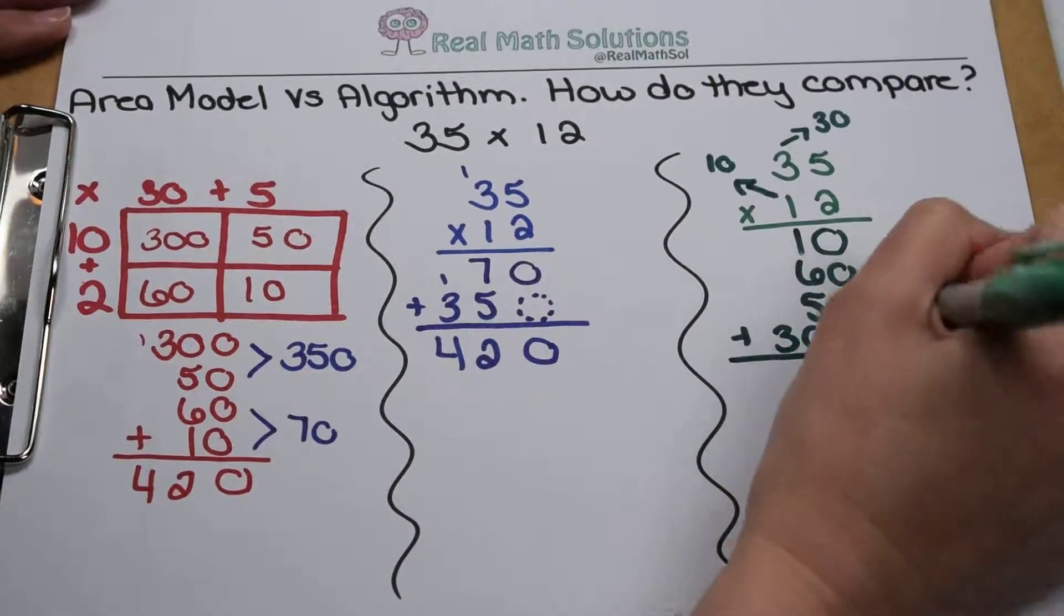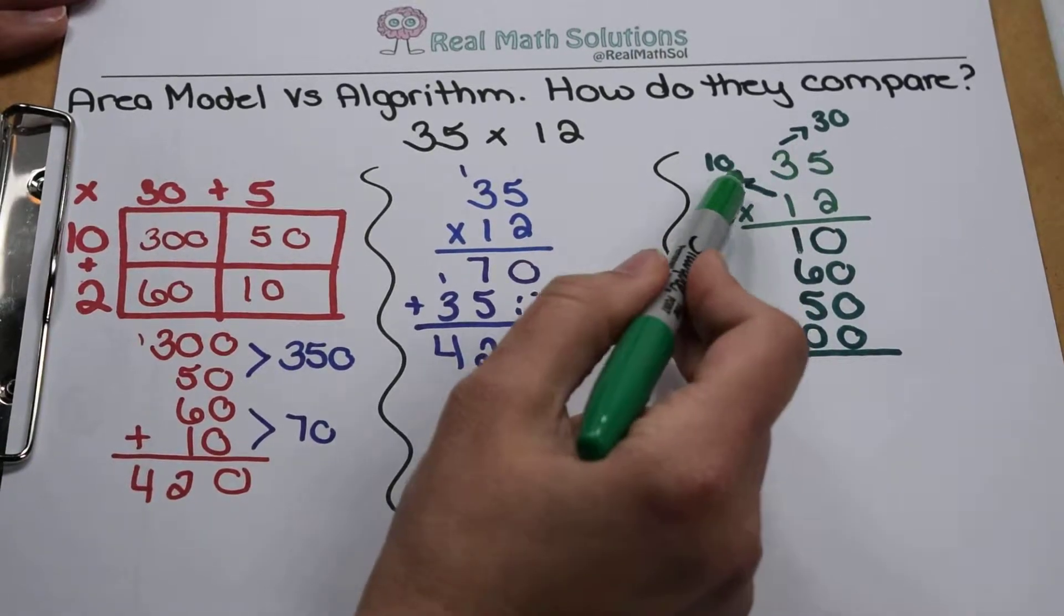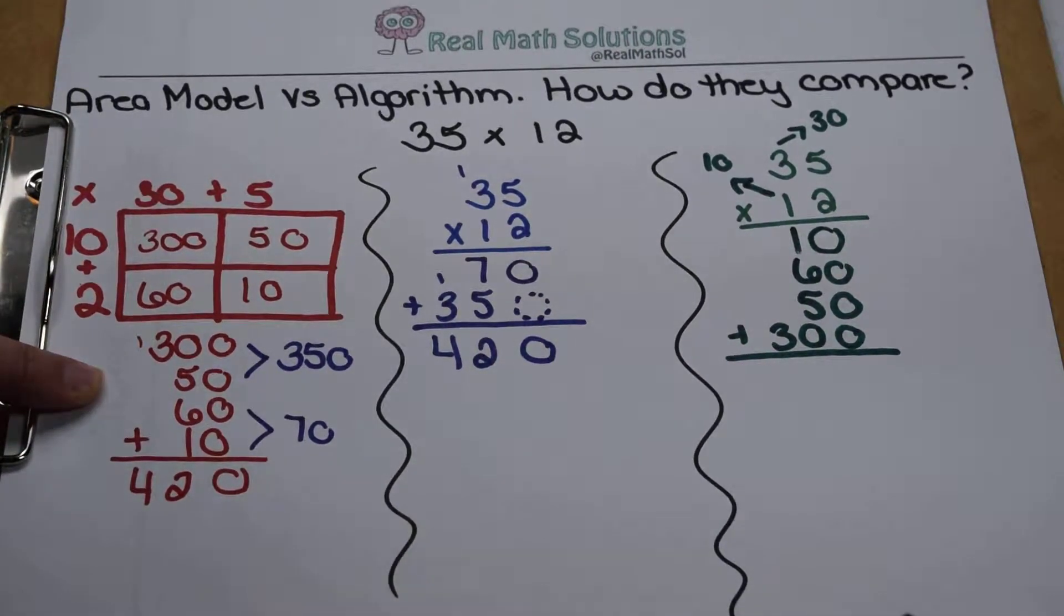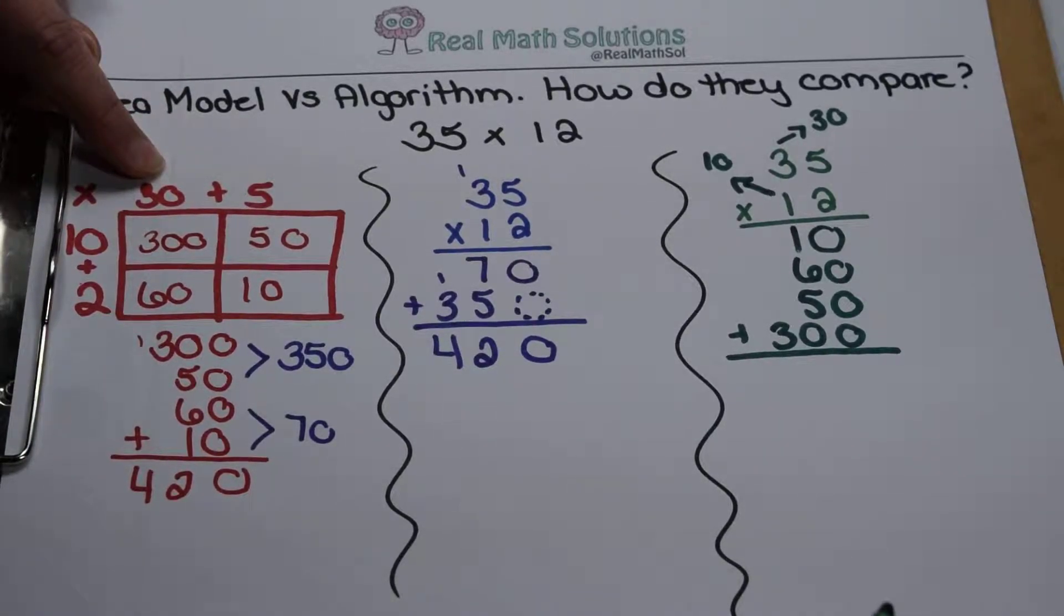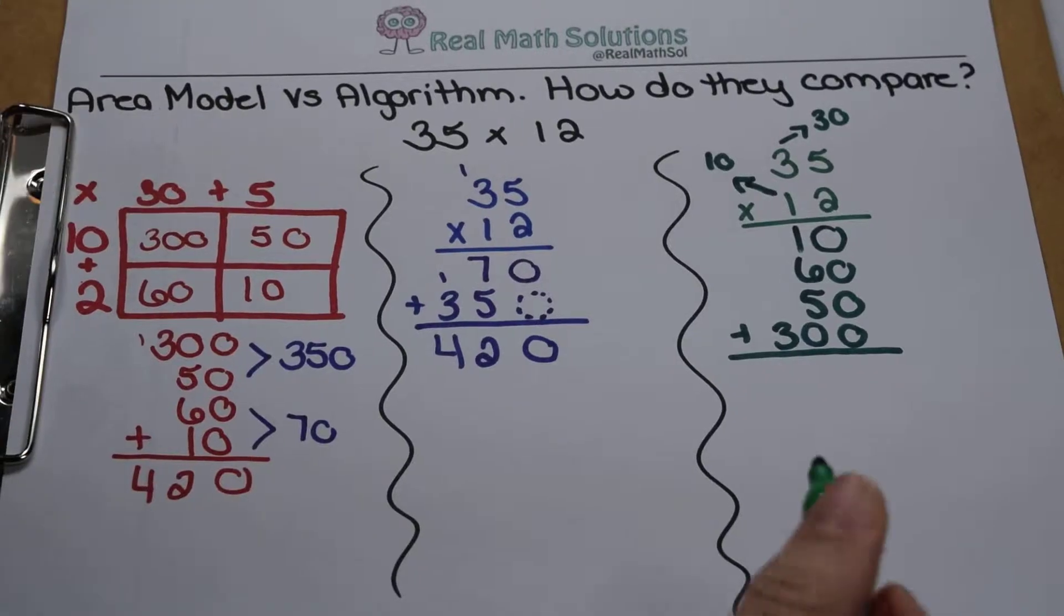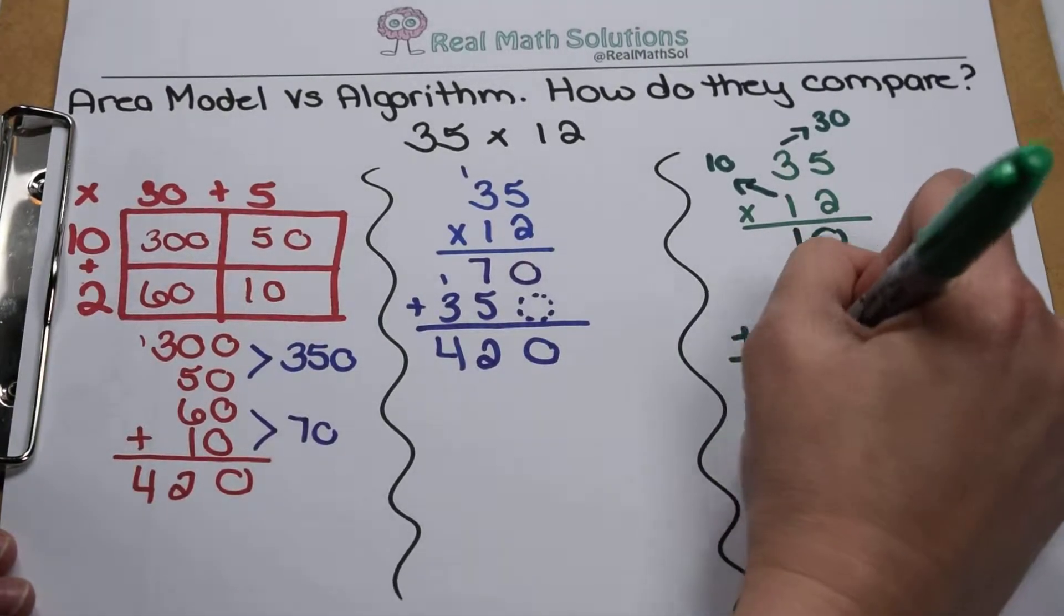So in my traditional algorithm, if I think about what those place values tell me, I come out with the exact same list of numbers, solving the exact same combinations of problems that I did in the area model. When I total these up, we still come out with 420.